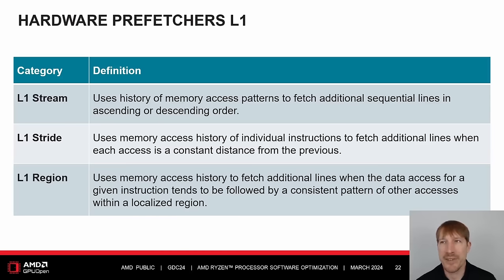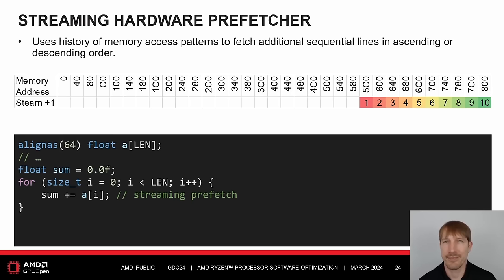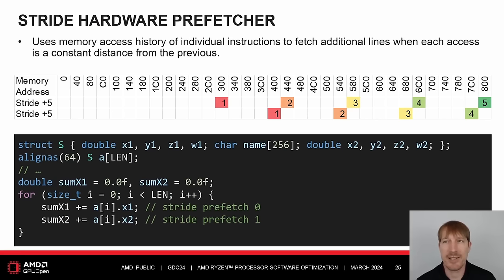Designing data structures that match hardware prefetcher access patterns may improve performance. The L1 data cache stream and stride prefetchers are favorites. Stream prefetchers may fetch additional sequential lines in ascending or descending order. Stride prefetchers may fetch additional lines when each access is a constant distance from the previous. The L2 cache also has a stream prefetcher, and additionally an up-down prefetcher that may fetch the next or previous line. This simple example may trigger a streaming hardware prefetcher as it iterates a contiguous array. However, these prefetchers may not trigger when iterating a linked data structure with nodes scattered randomly across memory addresses.